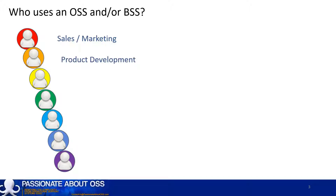Next we have the product developers. These are the people who decide what mobile plans to offer to market, as well as designing the available product variances. They use OSS and BSS to manage the entire product lifecycle, from conceptualization through to retirement from being offered. We're not just talking mobile plans here — we're also talking fixed and the very many other plans that are offered to market.